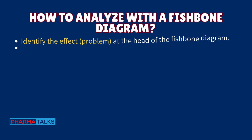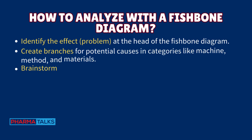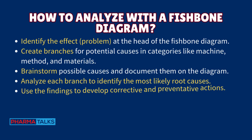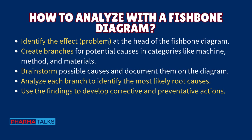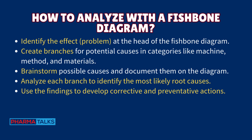To analyze with a fishbone diagram: identify the effect or problem at the head of the diagram. Create branches for potential causes in categories like machine, method, and materials. Brainstorm possible causes and document them on the diagram. Analyze each branch to identify the most likely root causes, then use the findings to develop corrective and preventative actions.